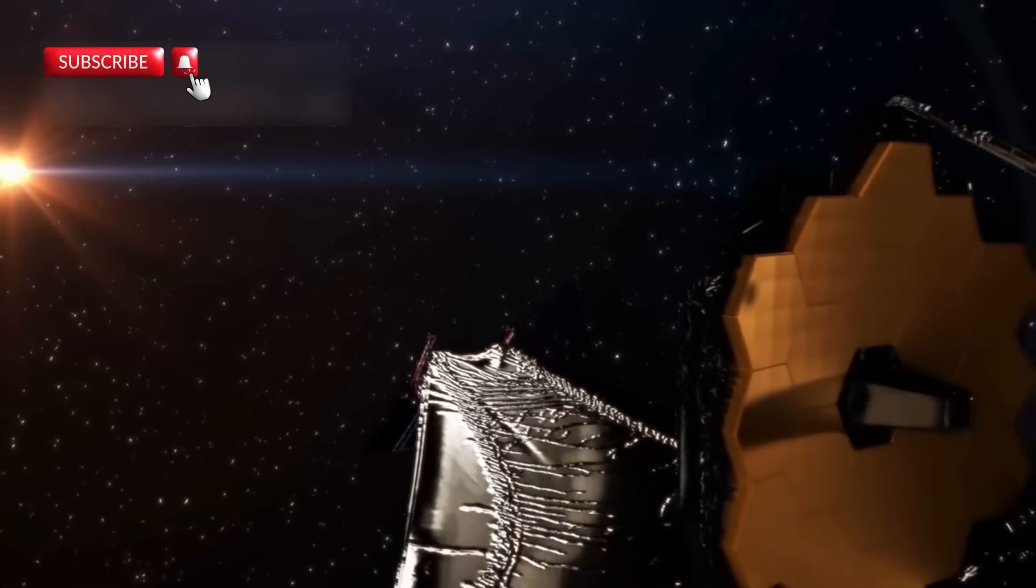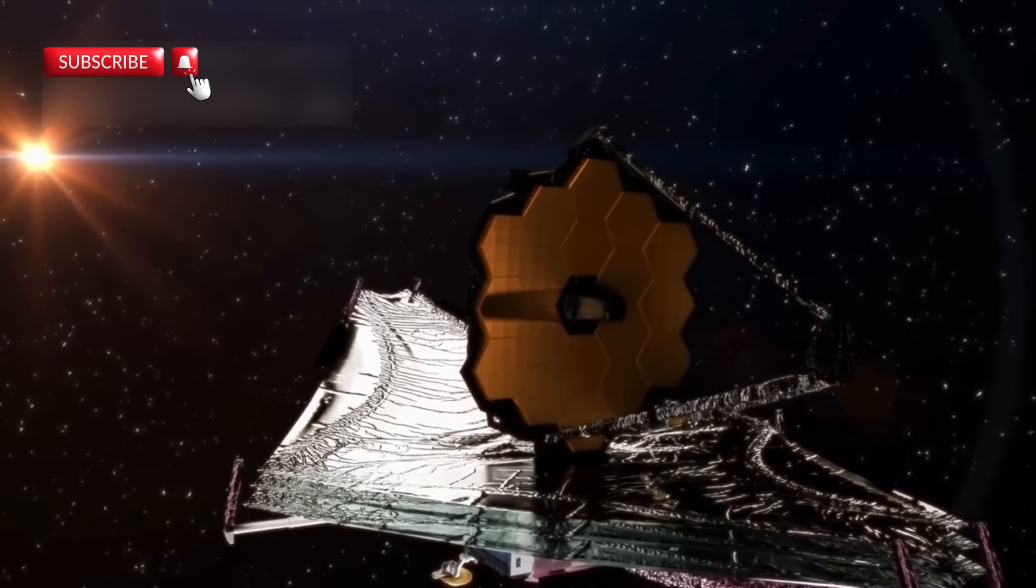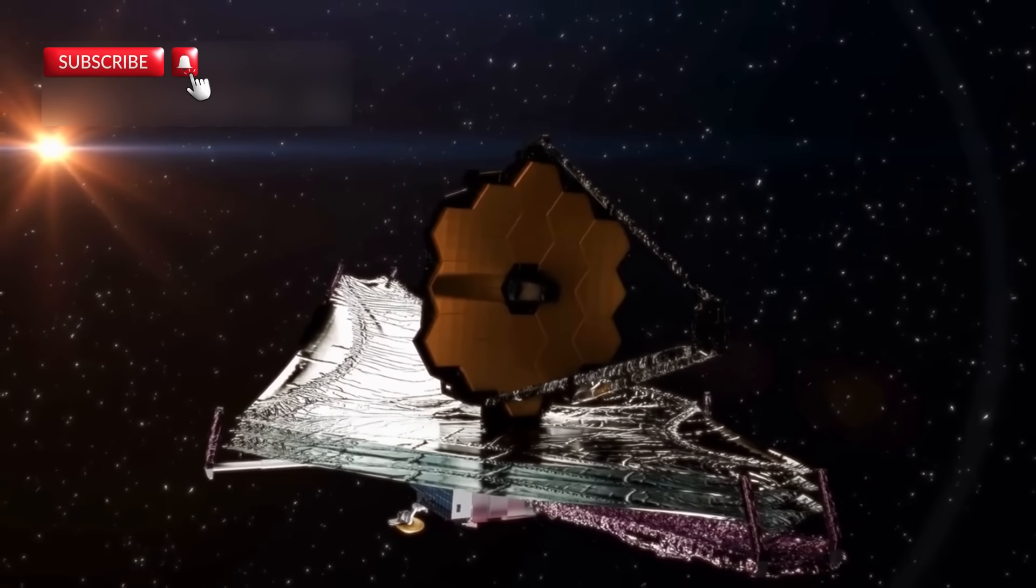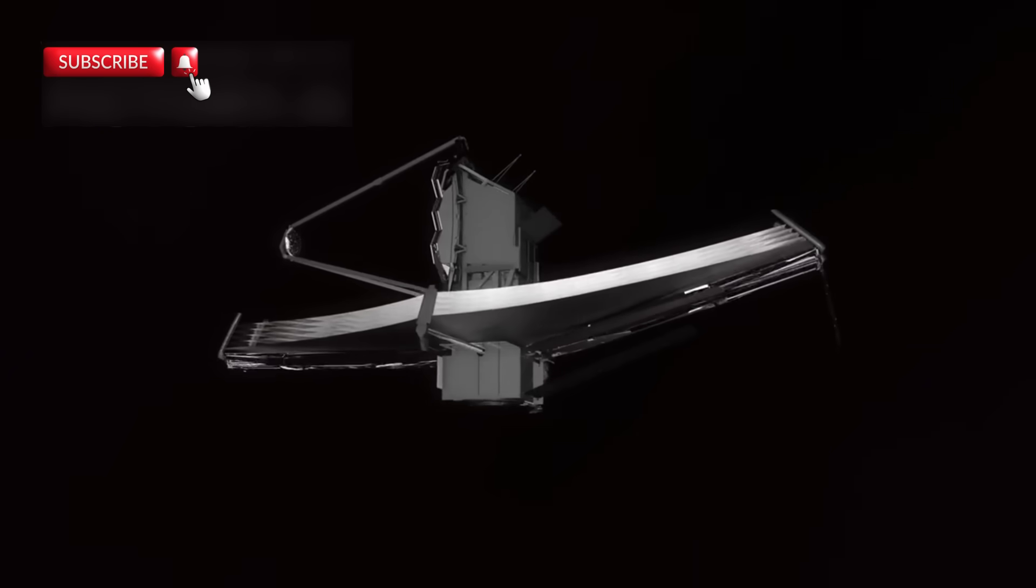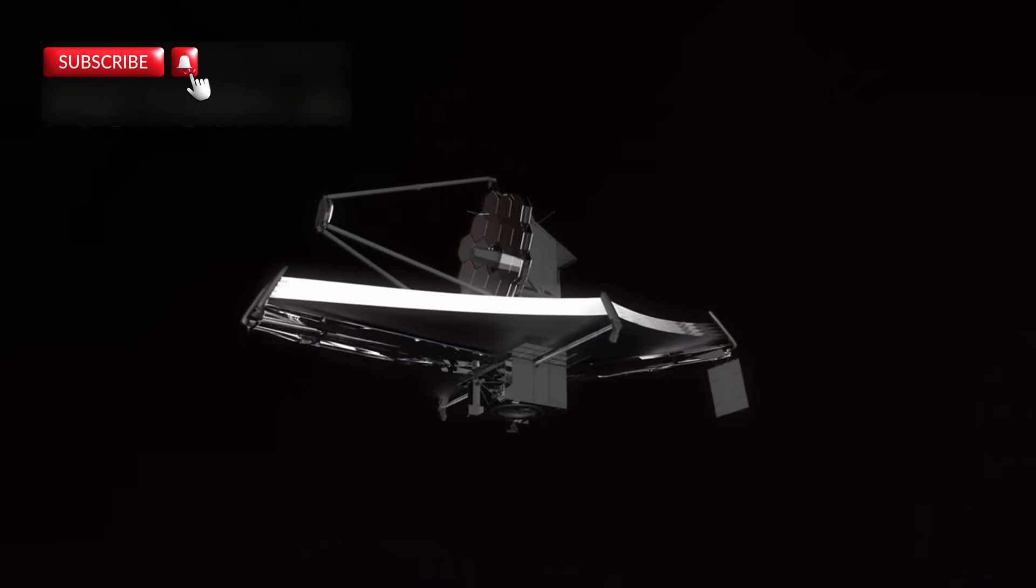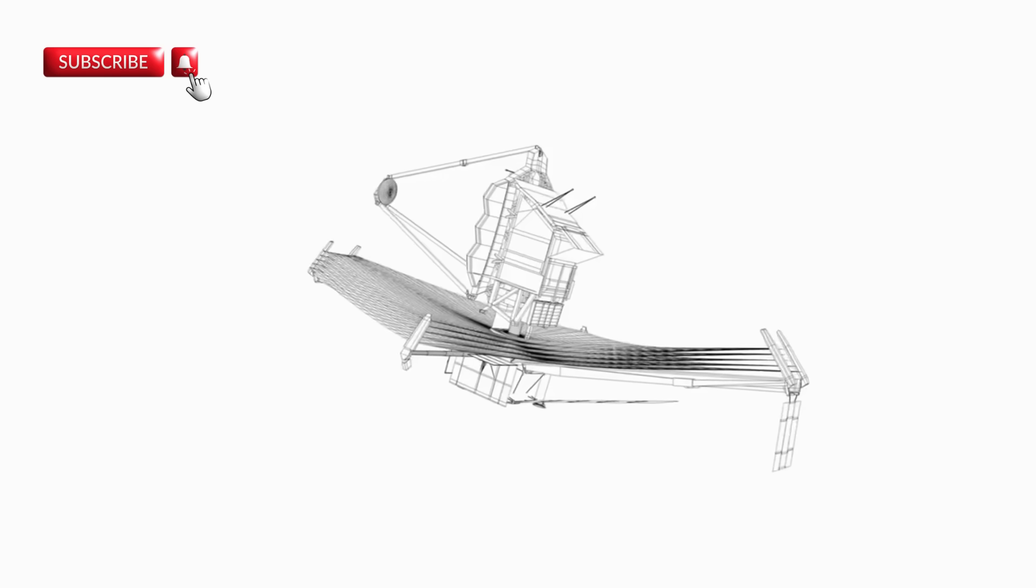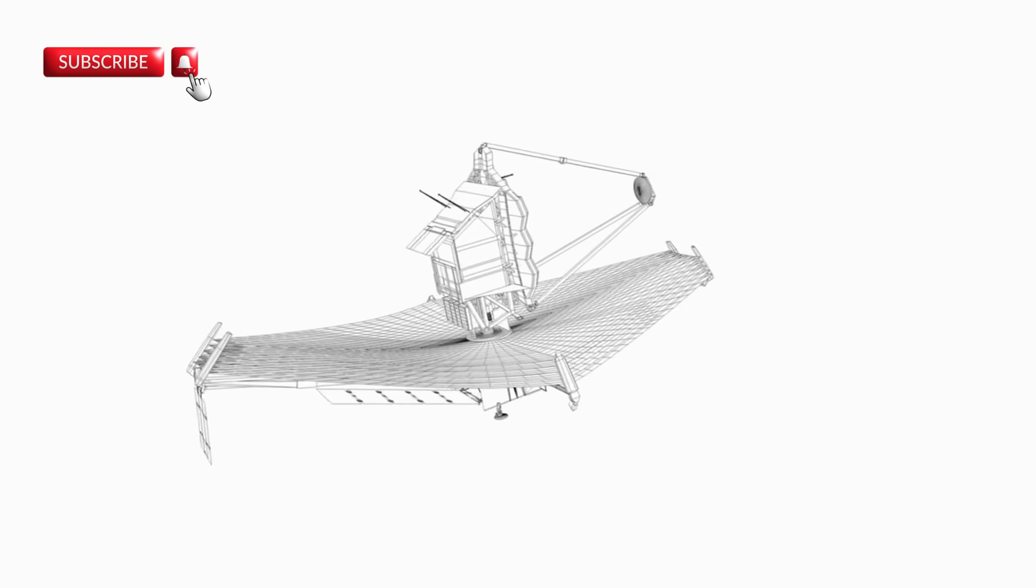Developed over many years by NASA, ESA, and the Canadian Space Agency, this telescope was designed to see farther into space than ever before. What makes it special is its ability to detect infrared light, which means it can look through cosmic dust and see objects that older telescopes, like the Hubble, simply couldn't. It's like switching from a blurry photo to Ultra HD.